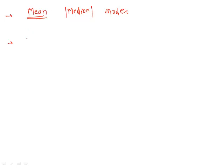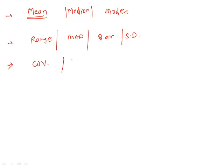In the second part we will understand measures of dispersion — range, MAT, variance, and standard deviation. After that, we will look at numbers that give you a relationship between different data sets: covariance, correlation, and finally we will cover regressions.